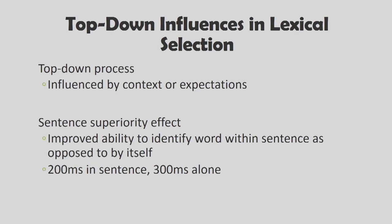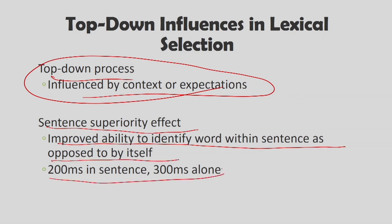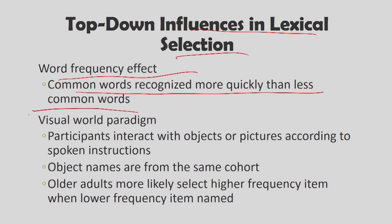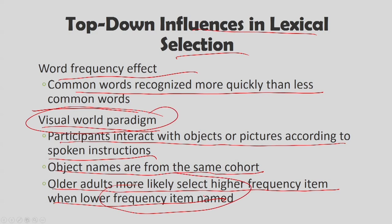Top-down influences in lexical access are influenced by context and expectations. The sentence superiority effect shows that a word presented within a sentence is identified in about 200 milliseconds, whereas the same word presented alone takes as long as 300 milliseconds. Word frequency also plays a role: common words are recognized more quickly than less common words. In the visual world paradigm, participants interact with objects according to spoken instructions, and adults are more likely to select higher-frequency items over lower-frequency items from the same cohort.